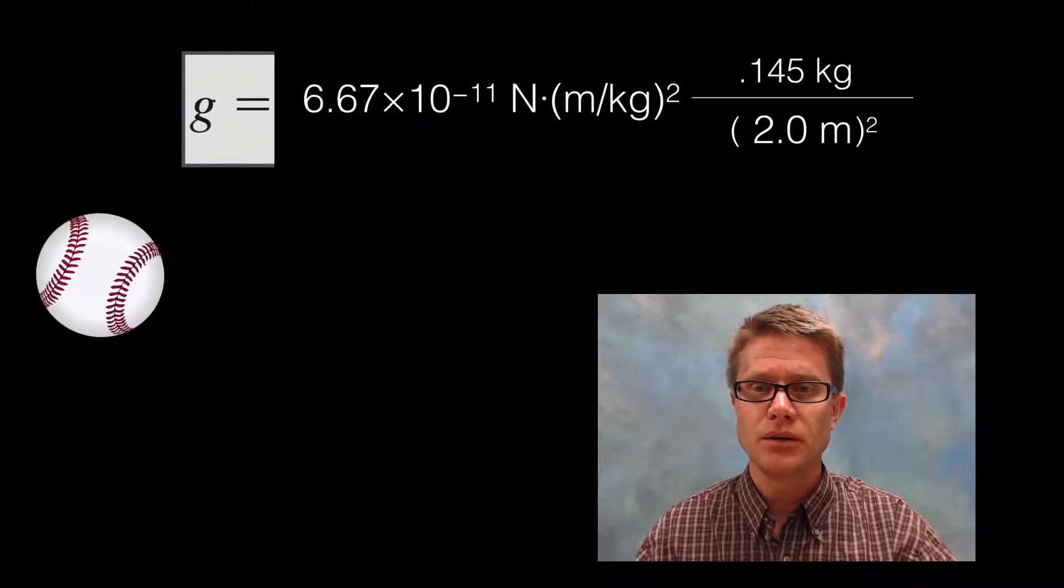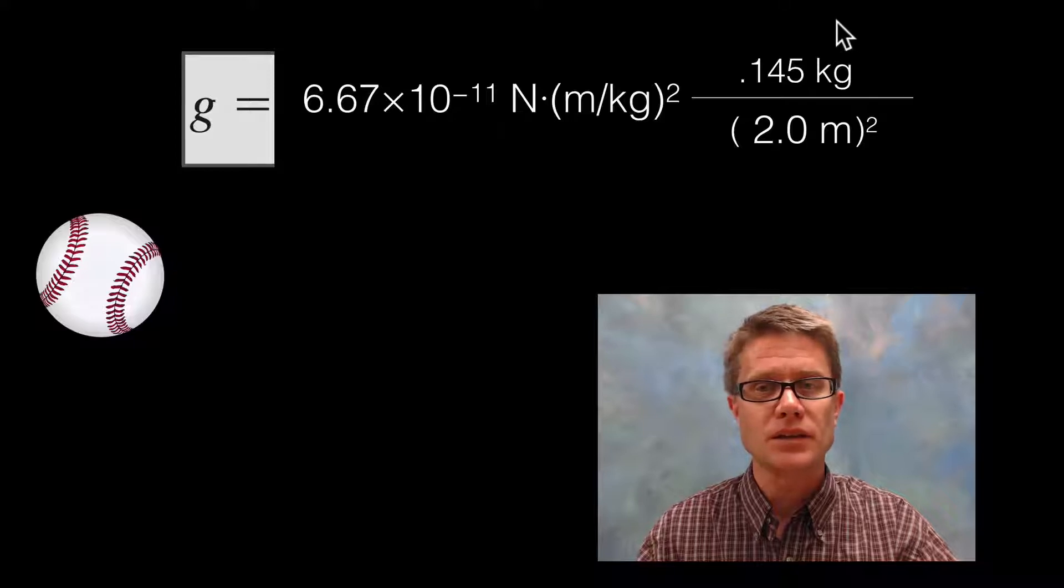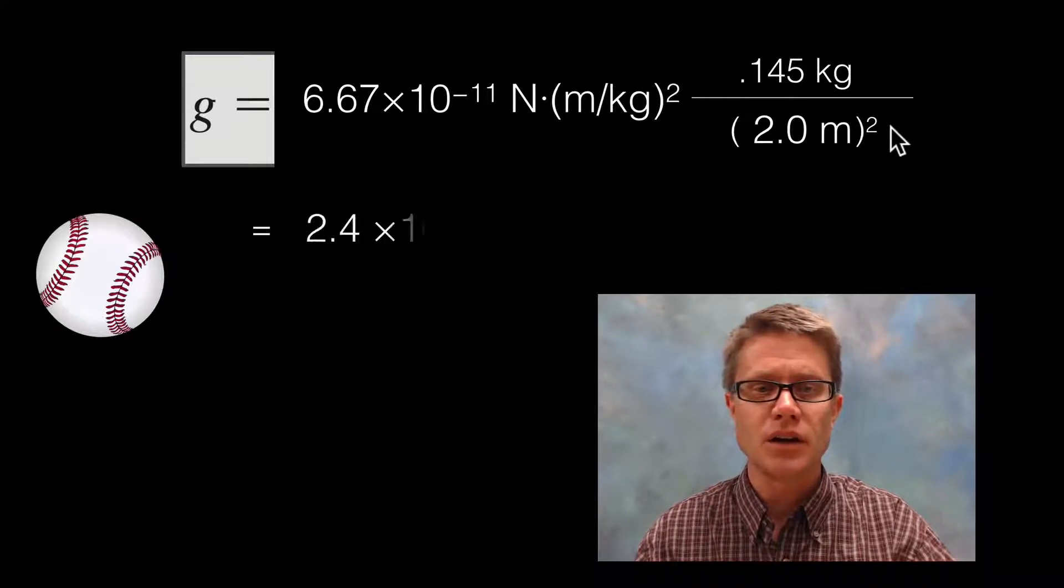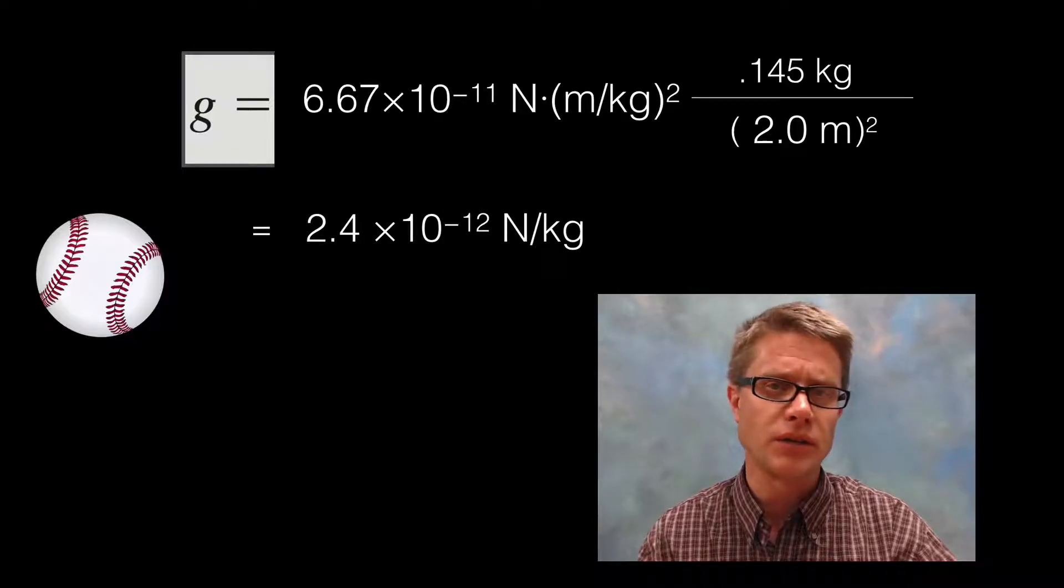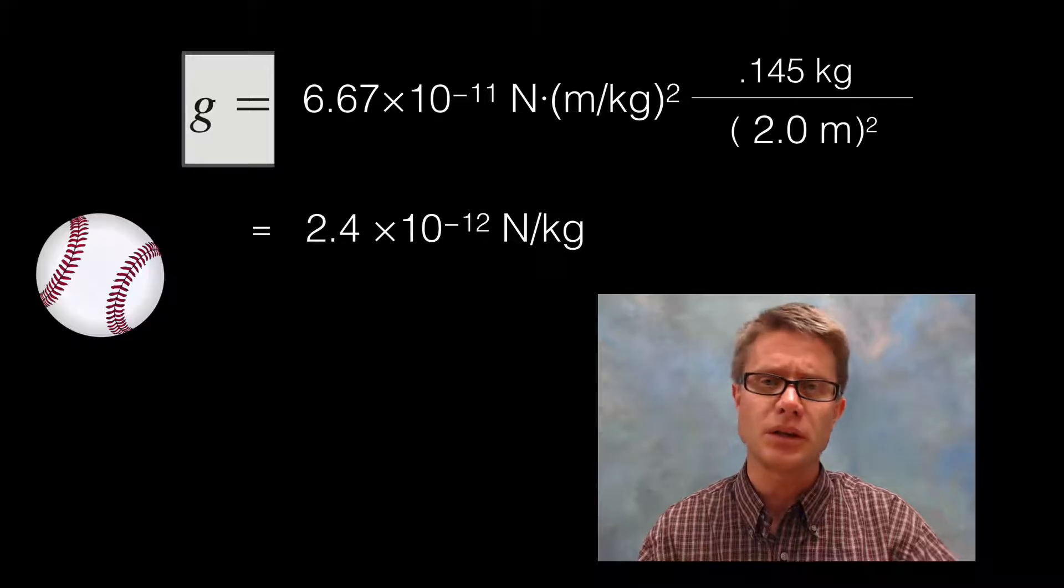I'm going to take those three values and place them into my equation. So I'm taking the big G times the mass divided by the radius squared. When I solve that I get a gravitational field strength or a g of 2.4 times 10 to the negative 12th newtons per kilogram.